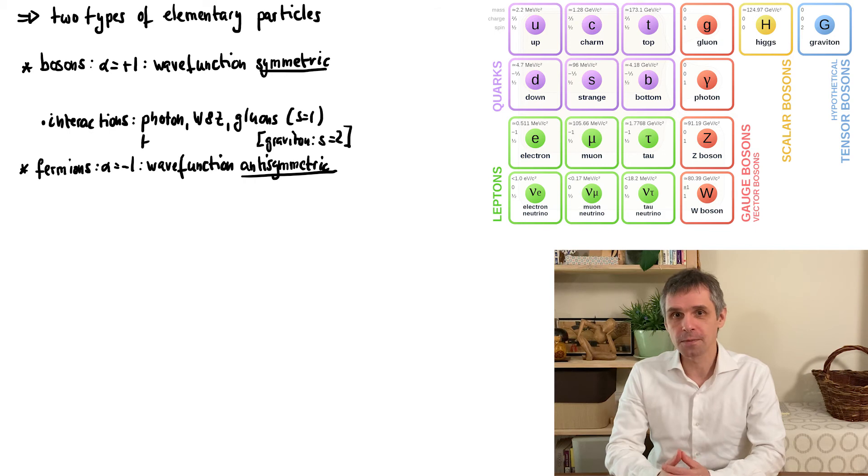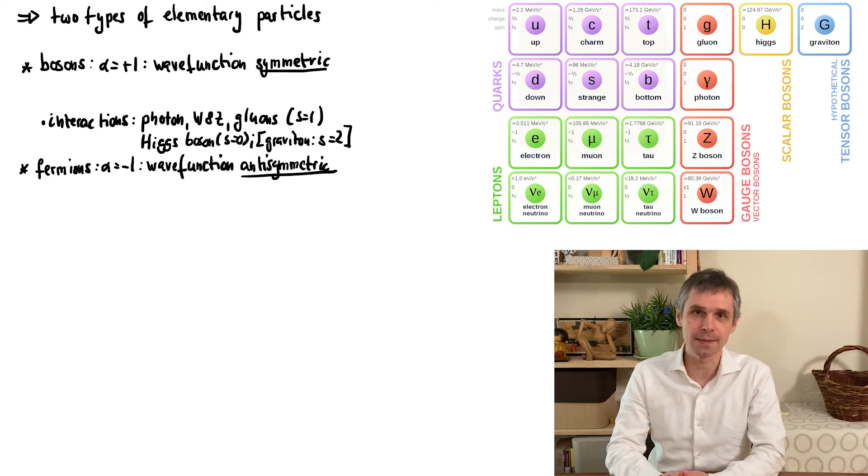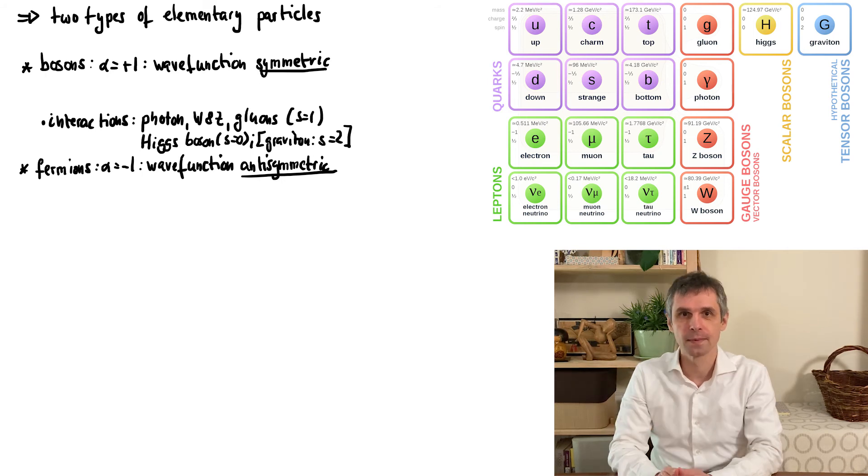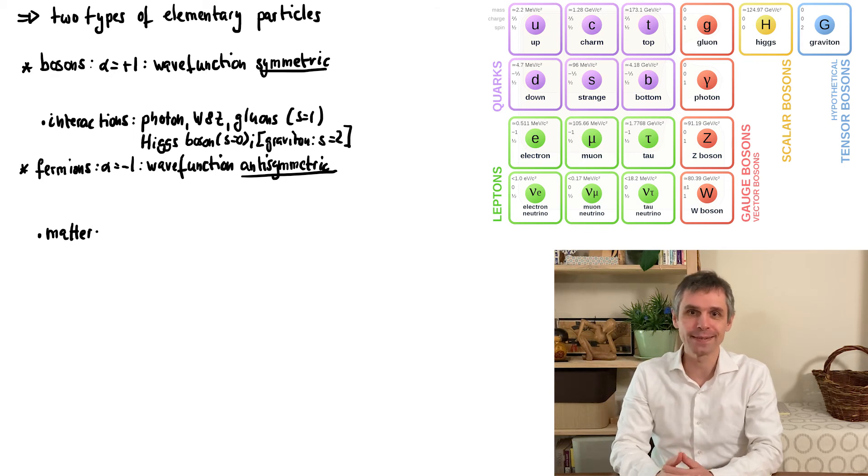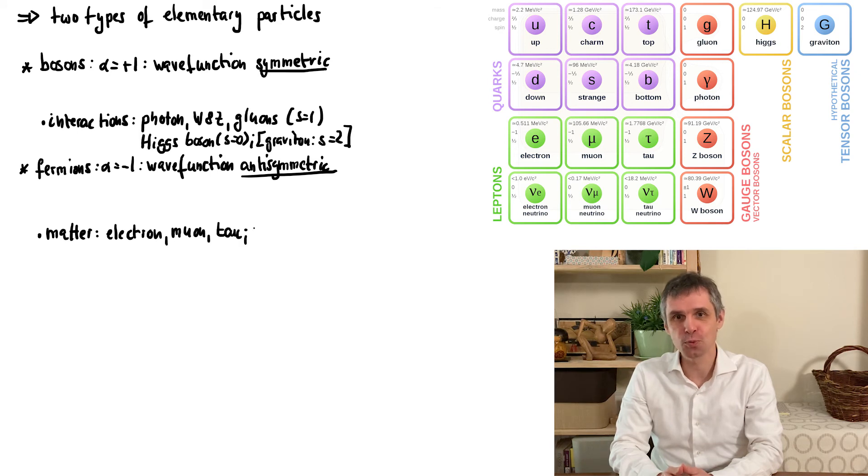Finally, there is also the recently confirmed Higgs boson, which has a vanishing spin and plays a role in giving masses to other particles. These other particles are in particular the elementary fermionic particles in the standard model, which are the electron, muon and tau particle, the corresponding neutrinos, and finally the quarks, of which it contains six types.